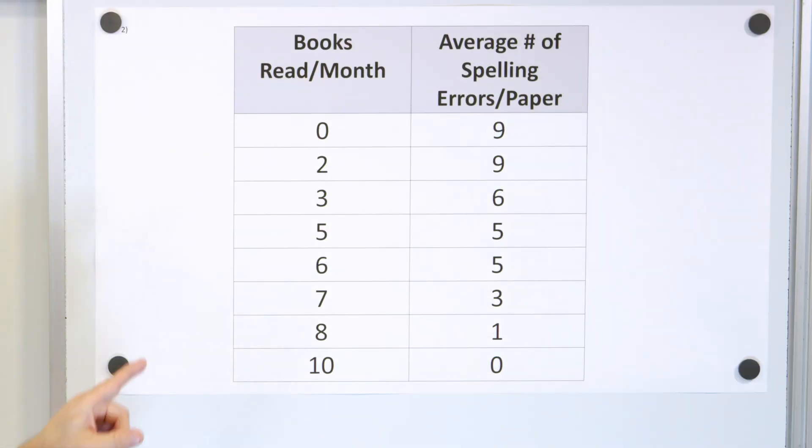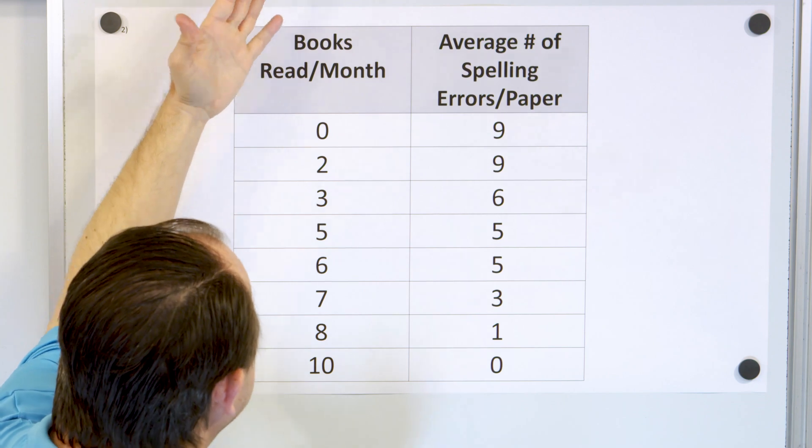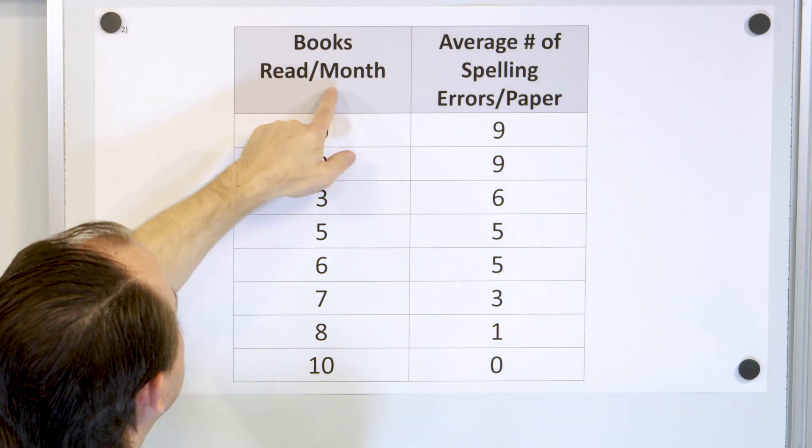Here is problem number two. We have a table, we have a bunch of people, we take a survey. How many books do you read per month?